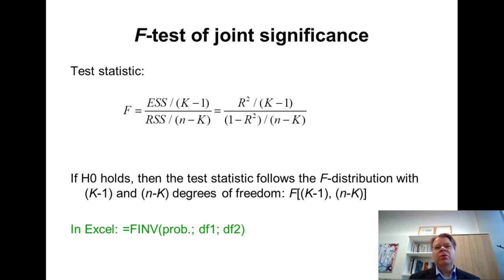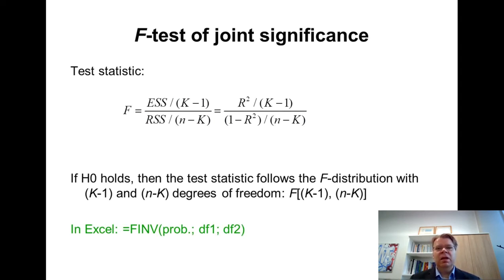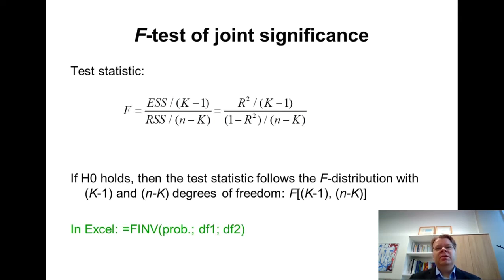The traditional approach is to use statistical tables of the F-distribution. A simpler way is to use the FINV function in Excel, which I have shown here in green. As arguments to the FINV function, you state the probability — the significance level, for example 5% — and then the two degrees of freedom: k minus 1 and n minus k. With those inputs, Excel calculates the critical value of the F-distribution.